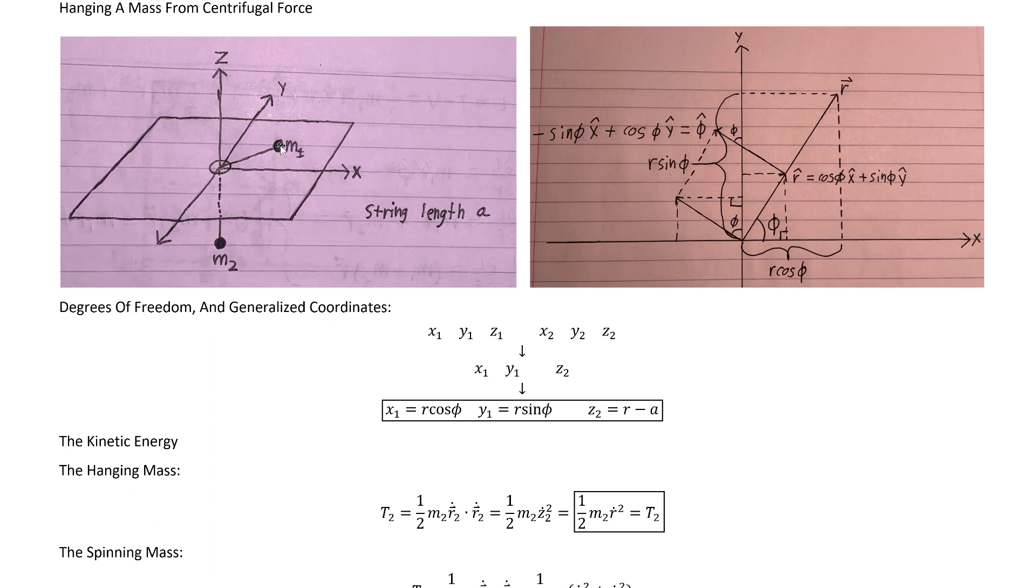We remember that M1 is restricted to moving in the XY plane, so we know immediately we don't need Z1 to describe it. We can just set that equal to 0 and ignore it. We just need X1 and Y1, and M2, because it only has the upward string tension and the downward gravitational force acting on it, is only moving in the Z direction.